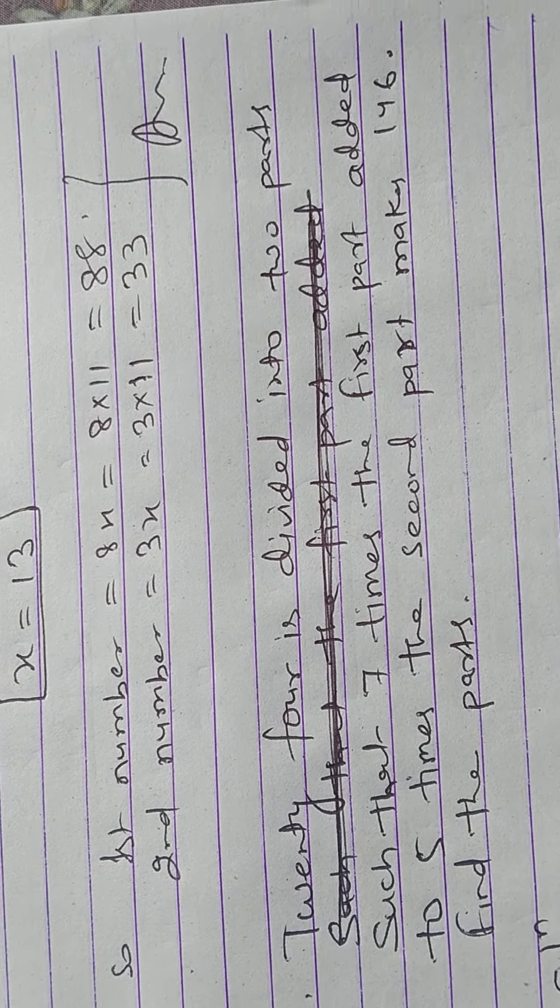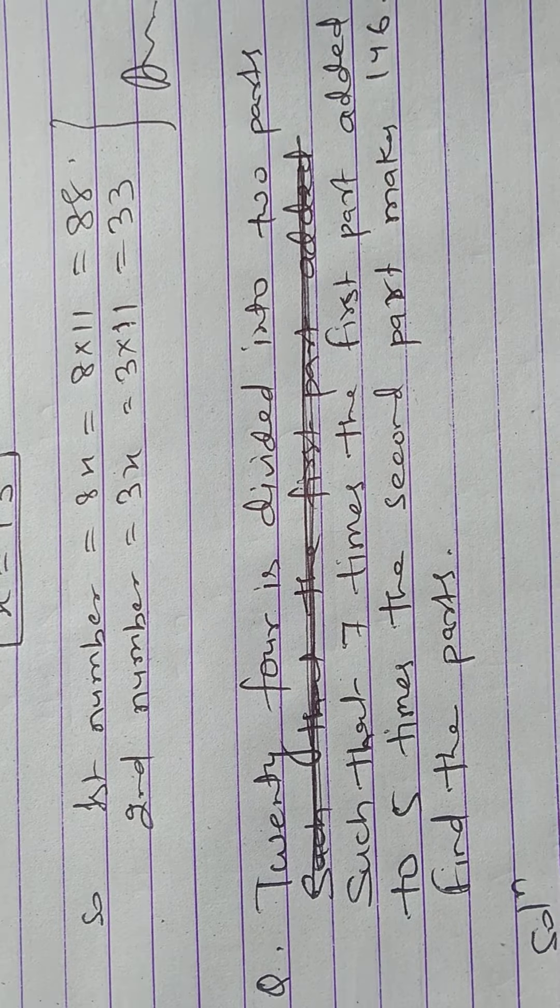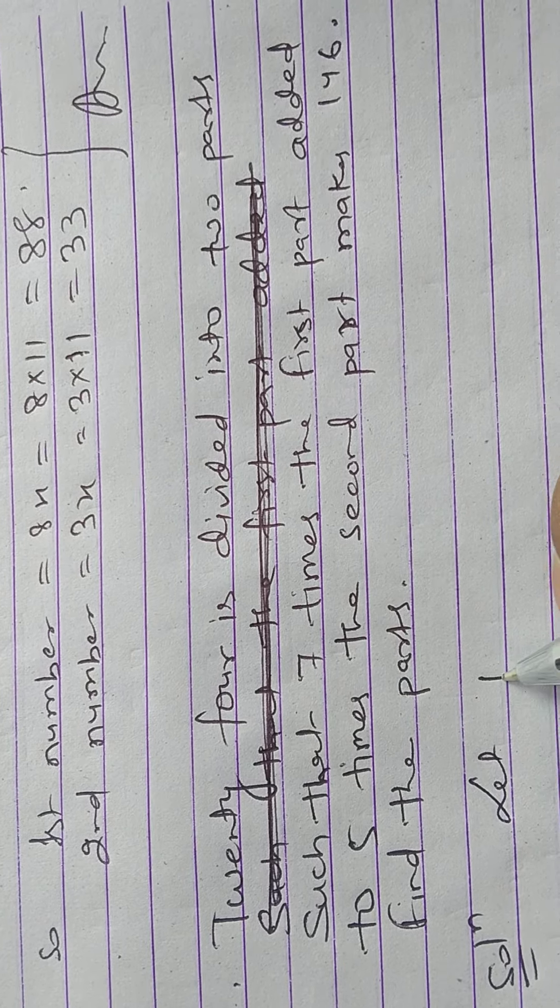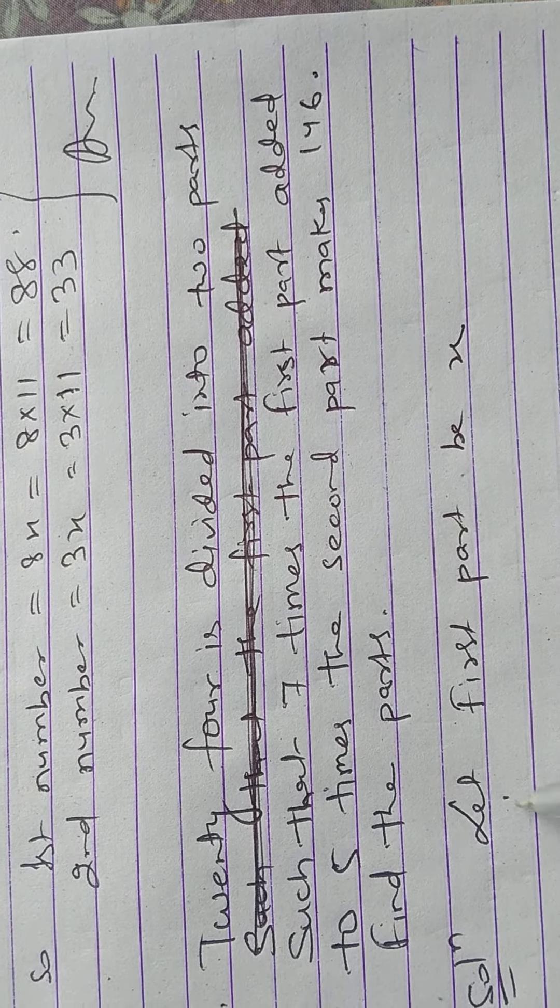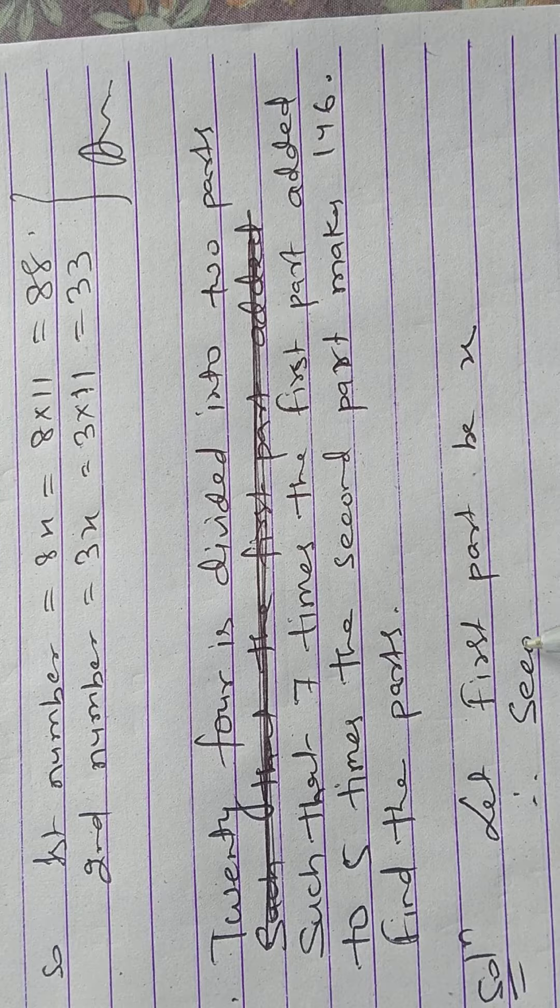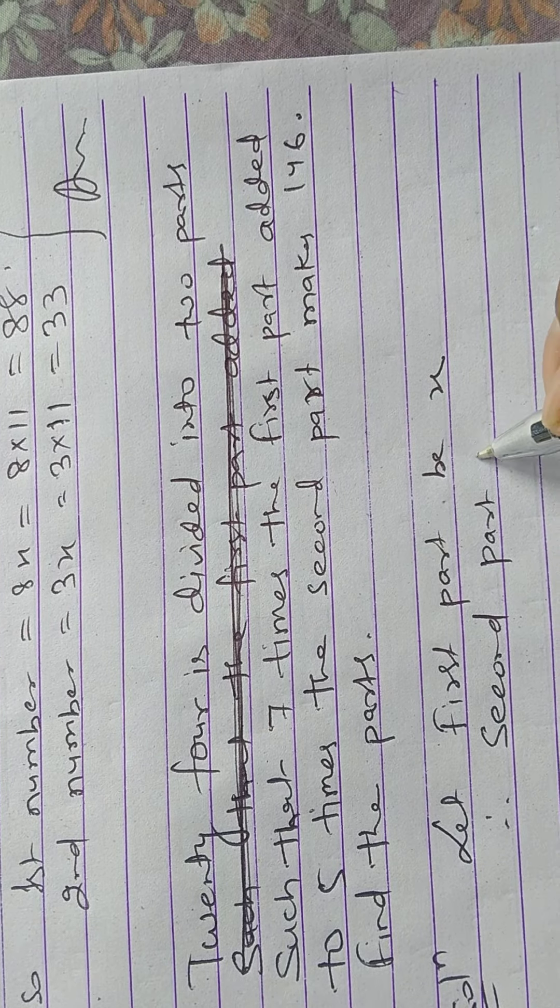Solution: 24 is divided into two parts. Let the first part be x, therefore the second part is 24 minus x. Now according to the question,